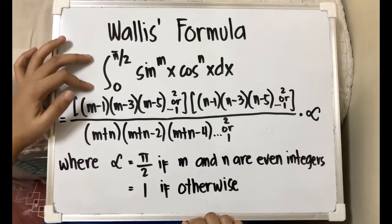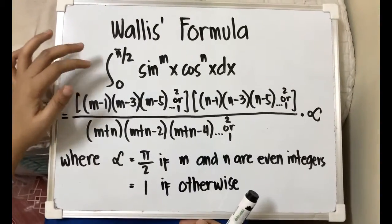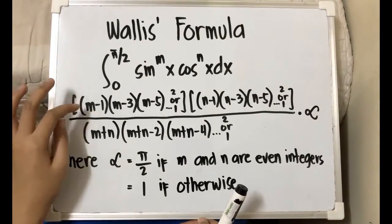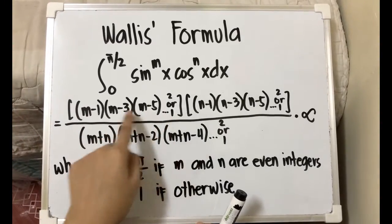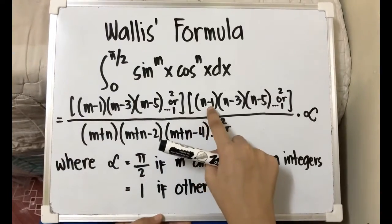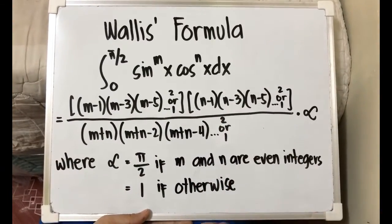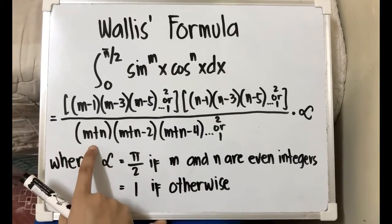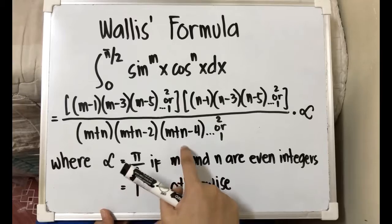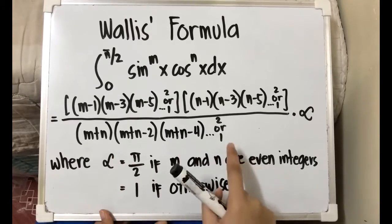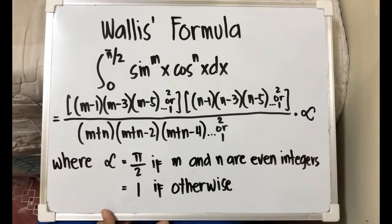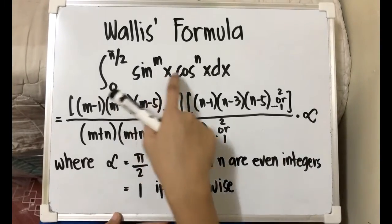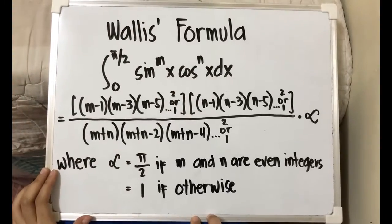In that case, if we have the integrand, we have a definite integral of this form that is also said to be equivalent to our Wallis' formula, which is (m−1)(m−3)(m−5)... until the result is either 1 or 2, multiplied by (n−1)(n−3)(n−5)... until the result is 1 or 2, all divided by (m+n)(m+n−2)(m+n−4)... until the result is 1 or 2. We also multiply by lambda, where lambda equals pi over 2 if m and n are both even integers, and lambda equals 1 otherwise.